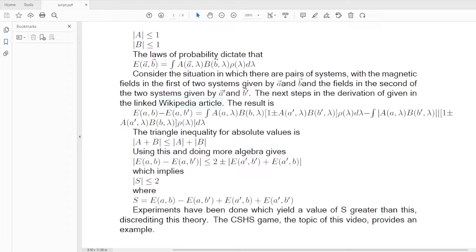Consider the situation in which there are pairs of systems with the magnetic fields in the first of the two systems, given by A and B, and the fields in the second of the two systems, given by A' and B'. The next steps in the derivation are given in the linked Wikipedia article. Go to the description of the video, and download the script, and you will have access to the links.